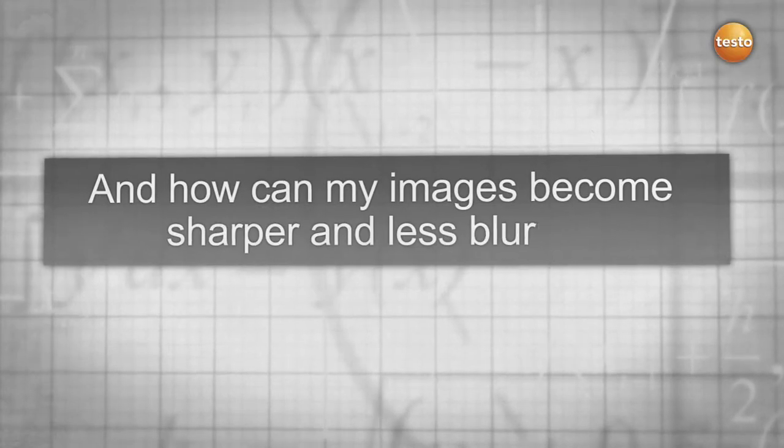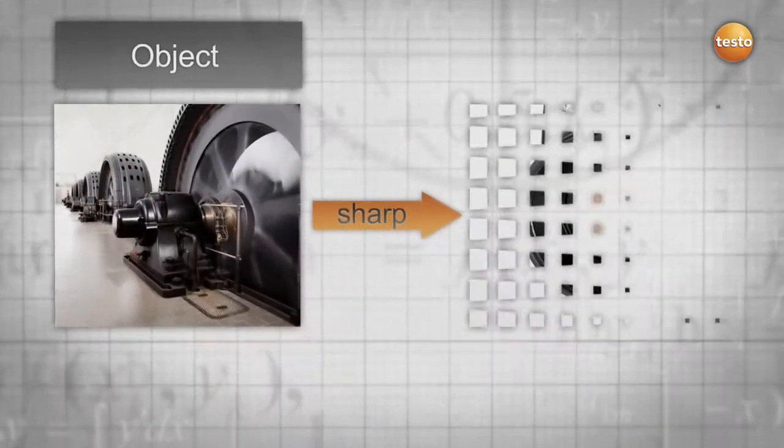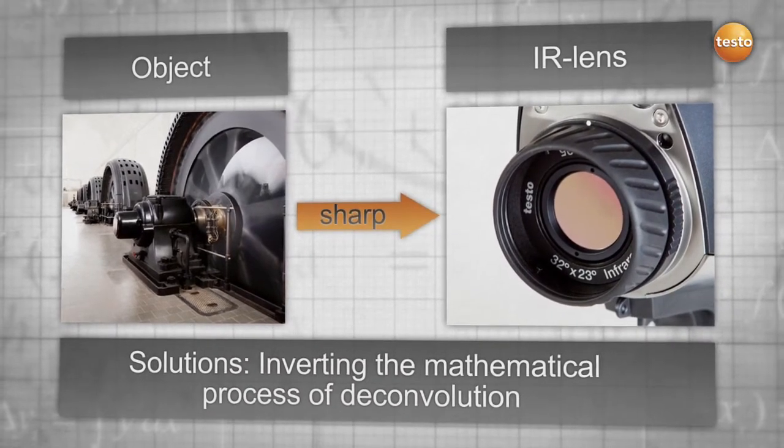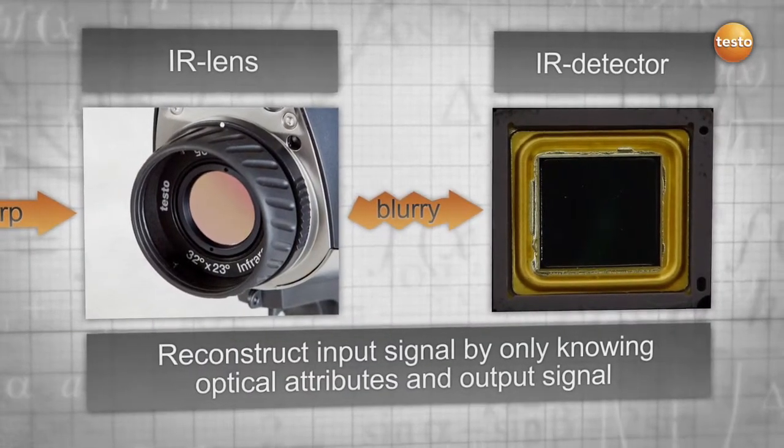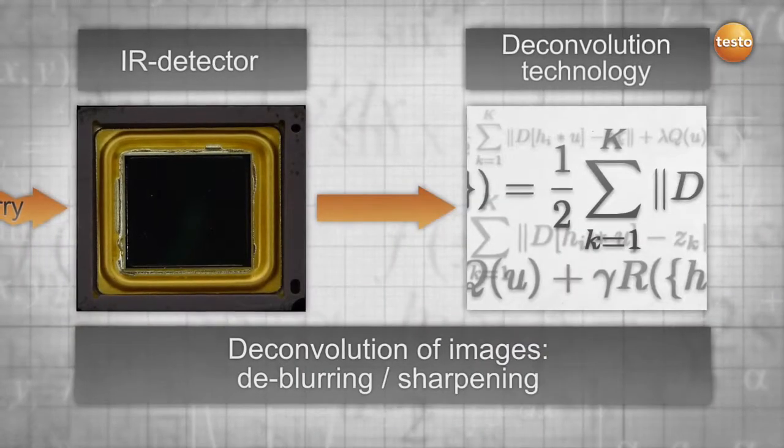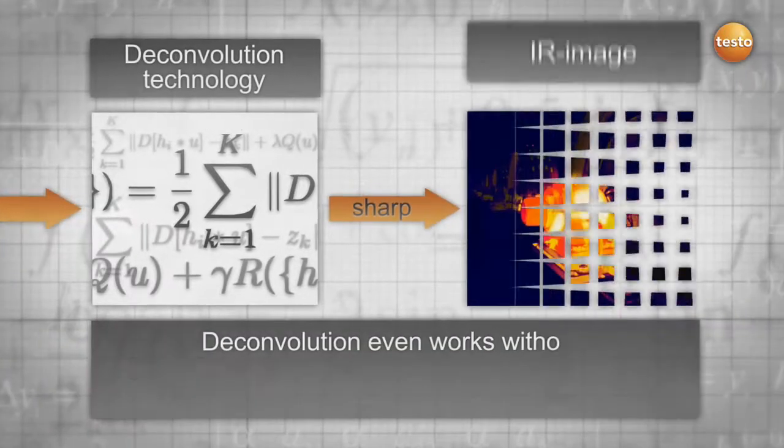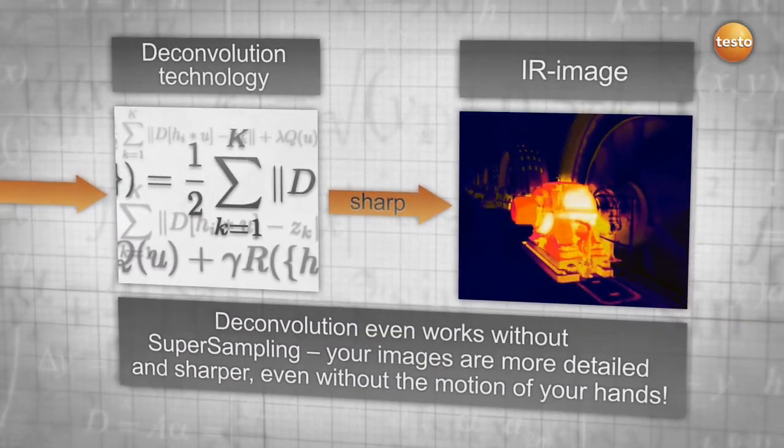Another challenge is to get clear and sharp pictures out of your measurements. With the help of deconvolution, we are able to reconstruct the input signal by recalculating the output signal with the optical attributes of the lens. Your images are therefore less blurry and sharper. Did you know that this technology works independent from super sampling? Your images are more detailed and sharper even without the motion of your hands.